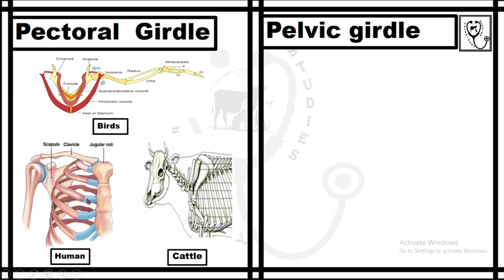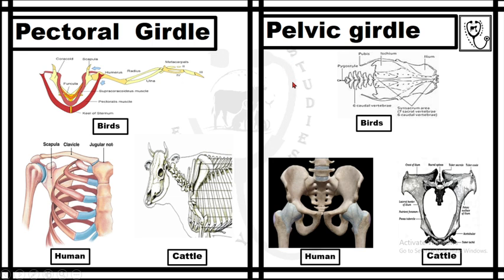The clavicle is mostly prominent in women because in humans this bone is prominent in the body and it also indicates the fat content of the body. Women who are thin or slim have a more prominent clavicle bone compared to obese women. However, in the case of domestic animals, the pectoral girdle consists of only a pair of scapula bones.